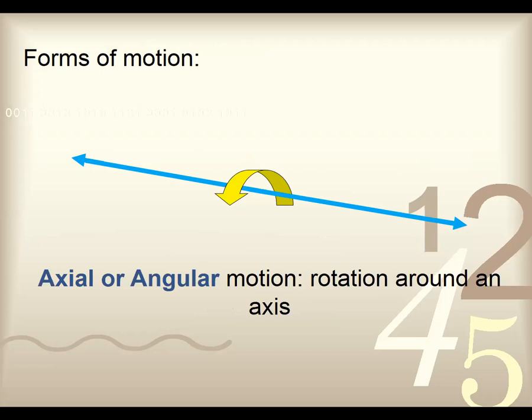Axial or angular — if you think about how most movements happen in our body, like flexion and extension at any one joint, there's an axis around which motion happens. If you think of more mechanical principles, this would be how the wheels on the bus go round and round.